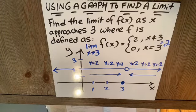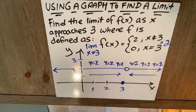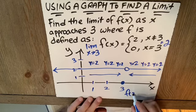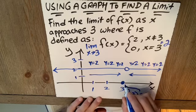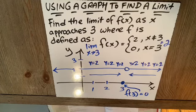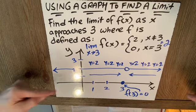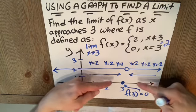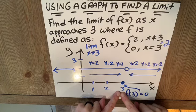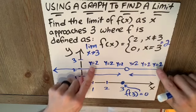Notice the fact that f of three, the function value at three, is zero. That's this point here. The fact that f of three equals zero has no bearing on the existence or the value of the limit as x approaches three. The trend in y, as we squeeze in on this x value of three, the trend clearly, look at the trend.